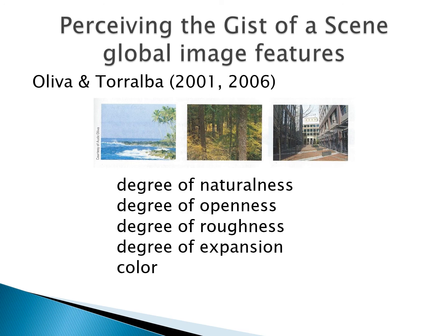Looking at these pictures for degree of naturalness: the two pictures on the left have much more naturalness than the one on the right, which is clearly manmade buildings. Degree of openness: the one on the very left is most open, the one in the middle is most closed, and the one on the right is kind of in between. Degree of roughness: the one on the right is not at all rough; the one in the middle is very rough with lots of different-angled lines and vertical lines; the manmade scene is somewhere in between.